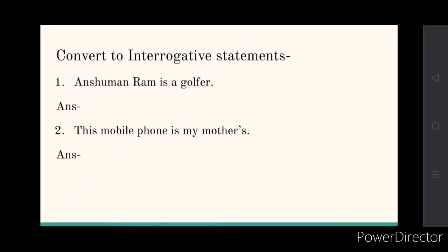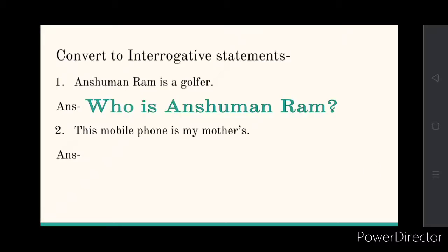The first exercise is to convert to interrogative statements. They have given you a sentence and you have to make a question whose answer will be that statement. For example, 'Anshuman Ram is a golfer' is the answer — so what would be the question? 'Who is Anshuman Ram?'